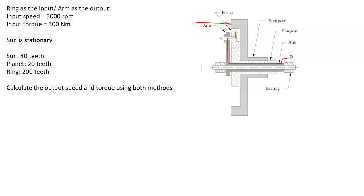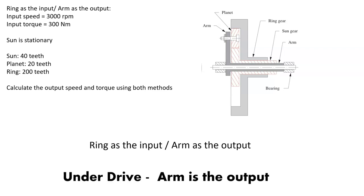This setup has a specific name. When you have the ring as the input and the arm as the output, that is an underdrive condition. Anytime your arm is the output — whether the ring or the Sun is the input — you're going into underdrive. So what we should expect is that the RPMs are going to go down and the torque is going to go up, with a ratio determined by the teeth count.